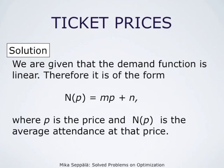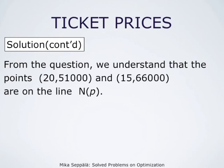Let us denote by N(P) the average attendance. We are given that the demand function is linear, therefore it is of the form N(P) = mP + n, where m and n are constants. From the question we understand that the points (20, 51000) and (15, 66000) lie on this line N(P).